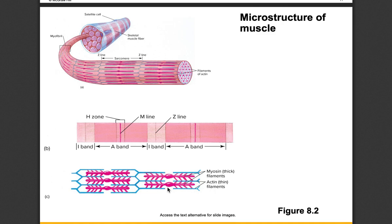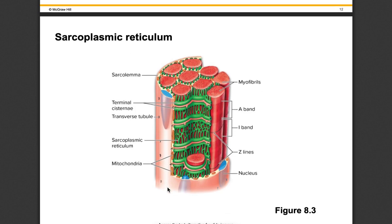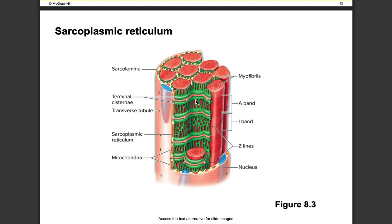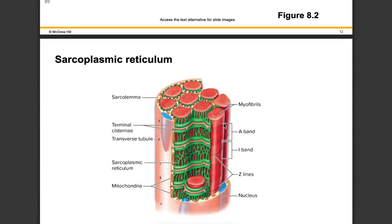The sarcoplasmic reticulum surrounds every single myofibril so calcium can get everywhere it needs to be. Without calcium, movement of actin and myosin doesn't occur. The transverse tubules — visible as tubes going down into the sarcoplasmic reticulum — communicate the signal from the motor end plate all the way down to the sarcoplasmic reticulum to release calcium in the cell.